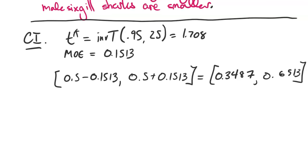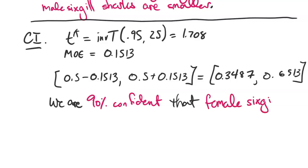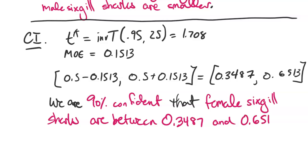The interpretation of that interval is that we are 90% confident that female six-gill sharks are between 0.3487 and 0.6513 feet longer than males.